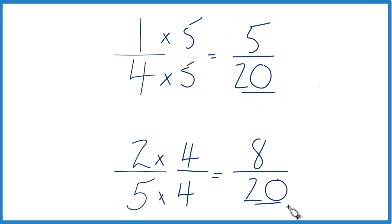Now we have the same denominators, we just compare the numerators. 8, that's greater than 5, so 8 twentieths, that's going to be greater than 5 twentieths.